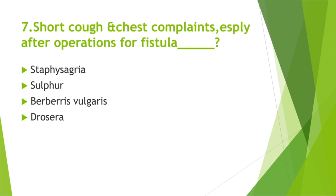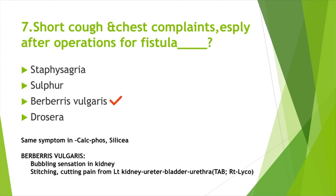Short cough and chest complaints especially after operations for fistula — Option A: Staphysagria, Option B: Sulphur, Option C: Berberis vulgaris, Option D: Thuja. Answer: Option C, Berberis vulgaris. The same symptom is also seen in Calcarea fluorica and Silicea. Berberis vulgaris: bubbling sensation in kidney, stitching cutting pain from left kidney to ureter then bladder and urethra. Same symptom seen in Tabacum; for right kidney the medicine is Lycopodium.